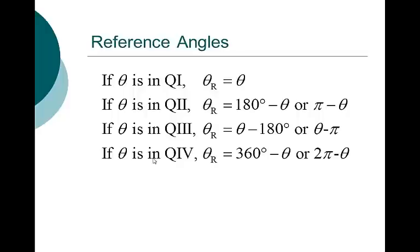Here are some formulas, and a lot of students like formulas. I personally don't — I think we're overthinking this. We're just trying to get the acute angle between the terminal side of the angle and either 0 or 180 degrees or 360, depending on what quadrant you're in. If you're in quadrant 1, it's just the angle. Quadrant 2: 180 minus the angle. Quadrant 3: the angle minus 180. Quadrant 4: 360 minus the angle.